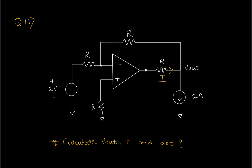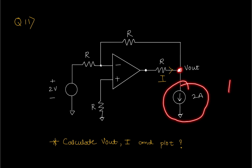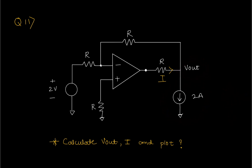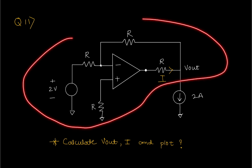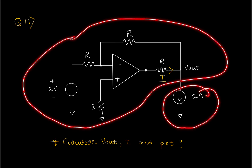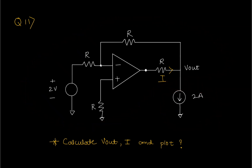Then they asked me to connect one DC voltage source and calculate V-out. After that they added a 2-ampere current source and asked what the change in V-out would be. This question was divided into two parts: first they asked about V-out with the voltage source only, and then they connected the current source and asked me to calculate the current and voltage.